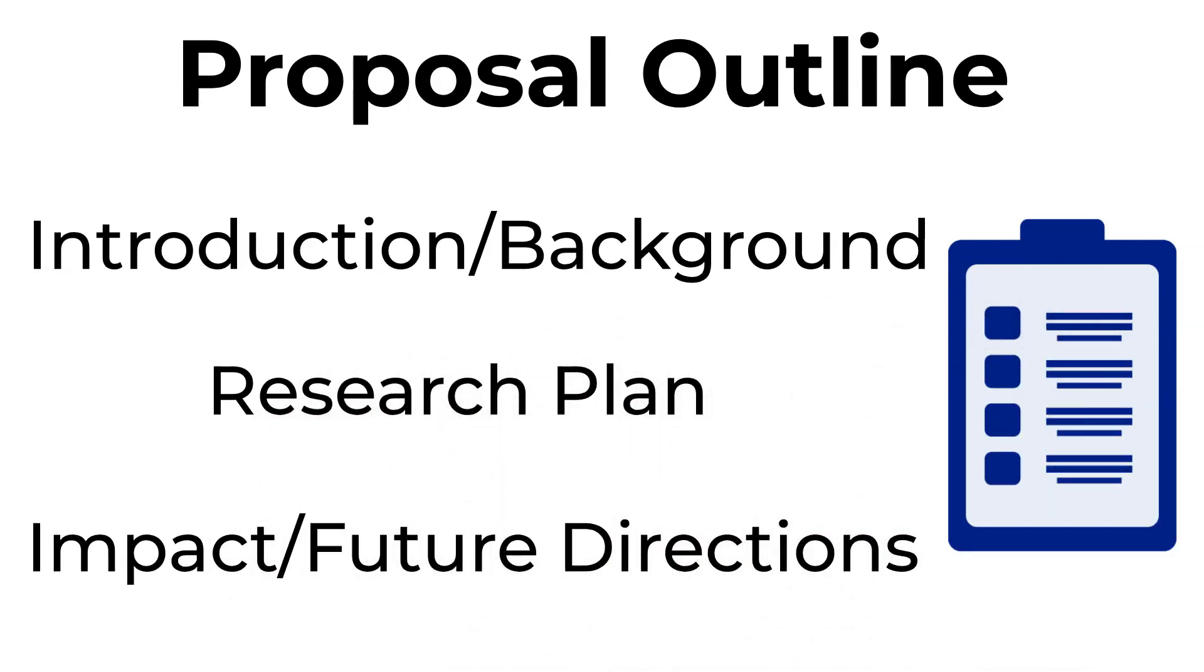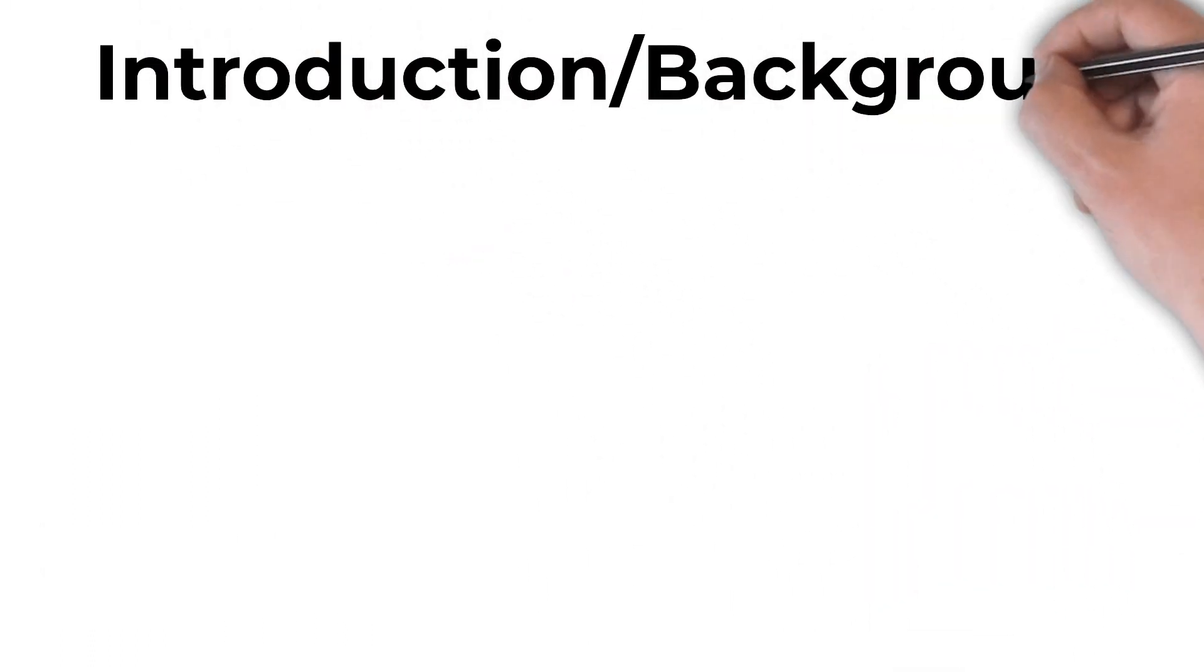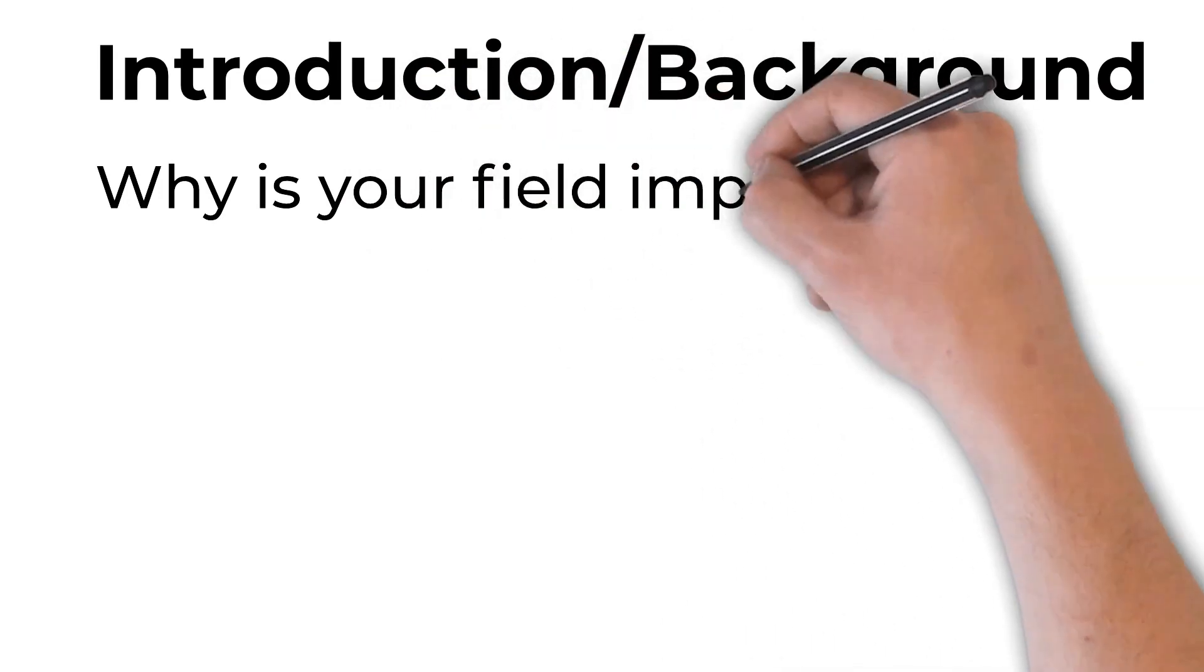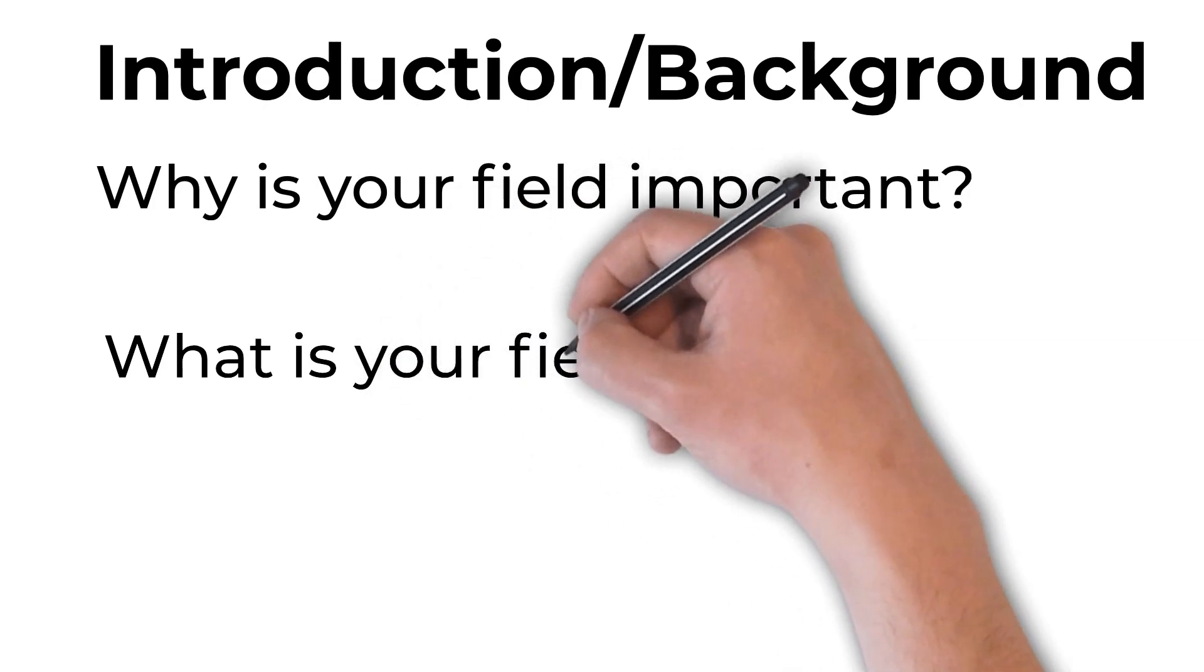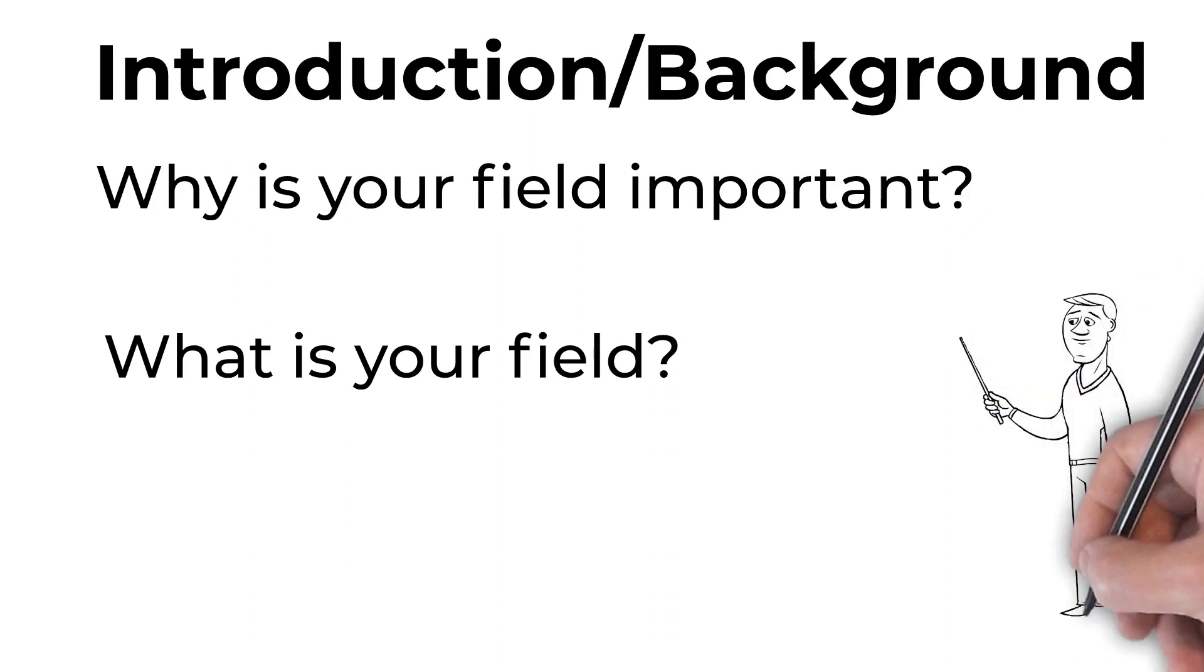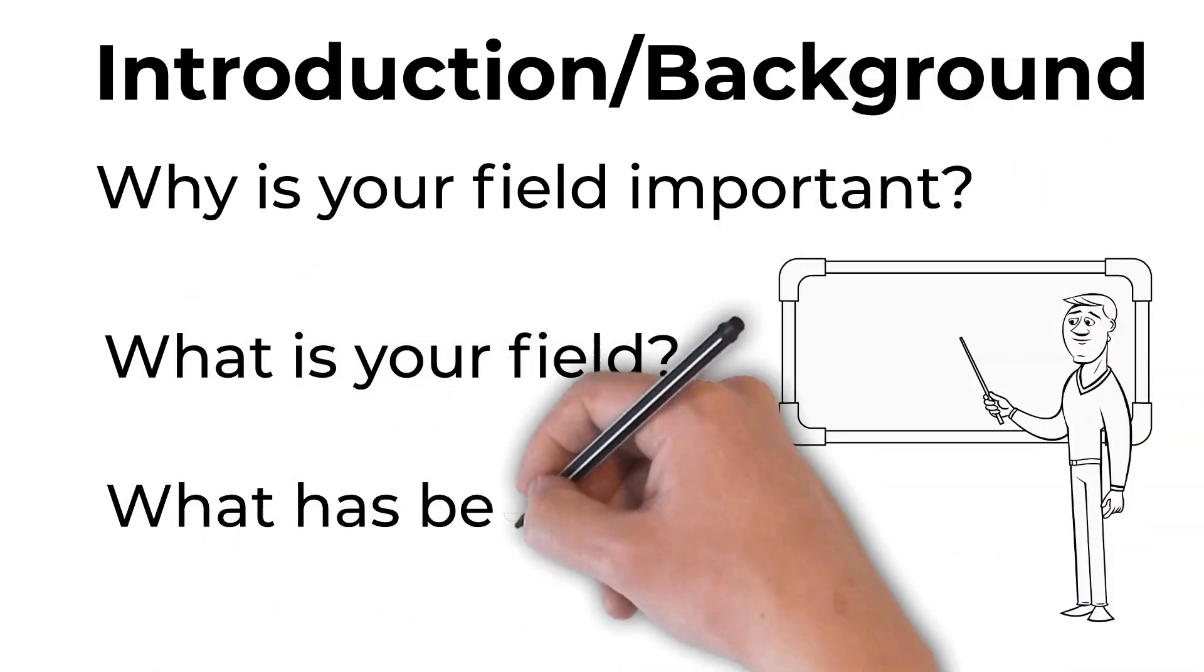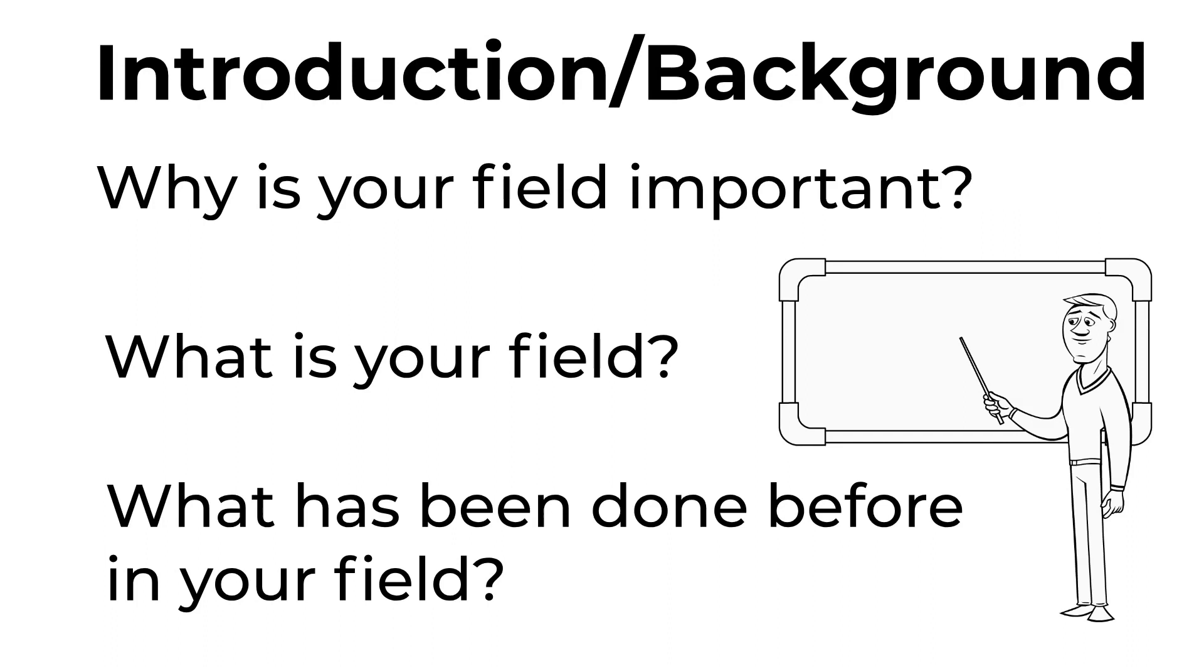In your introduction, you want to start by talking about why your field is important, and then cover what your field is. You want to give enough background knowledge that a non-expert can understand your field and your research. Finally, you want to cover what has been done in your field up to this point, so that people reading your proposal know where your research fits within the frame. This also shows them that you understand what's been done in your field and that your project is actually novel.